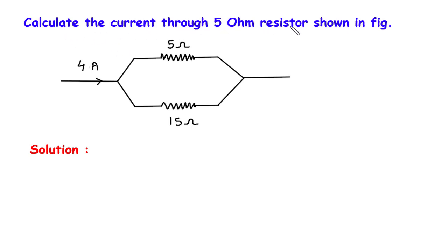Calculate the current through the 5 ohm resistor shown in the figure. Here we have to find the current through this 5 ohm resistor.